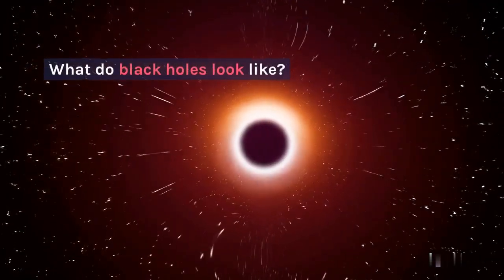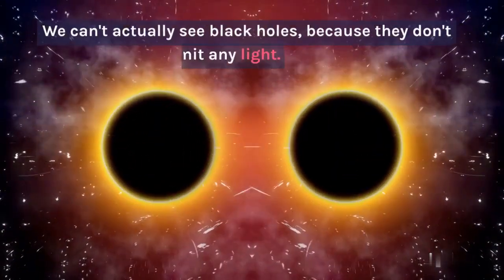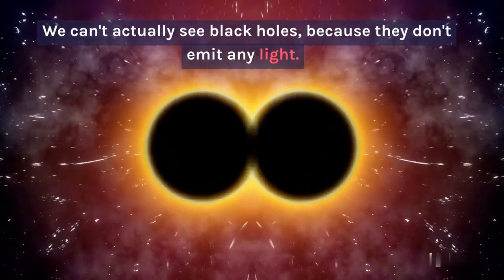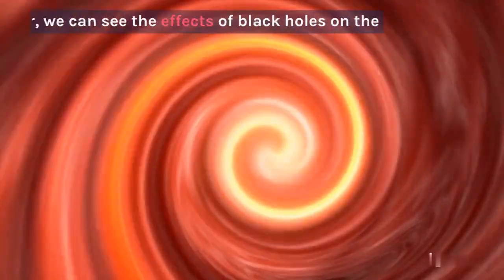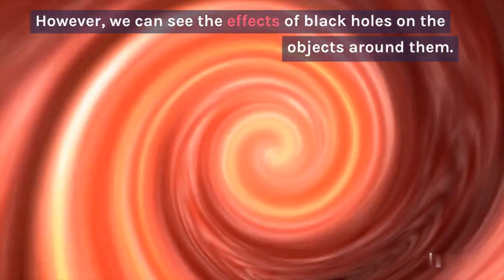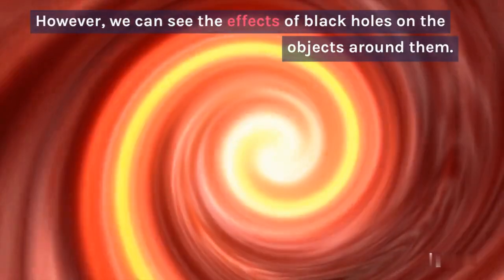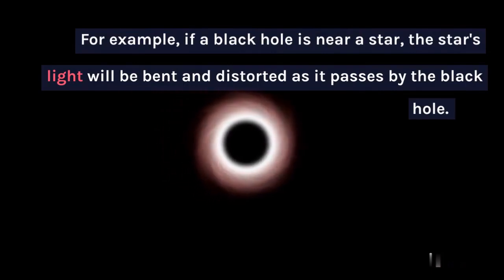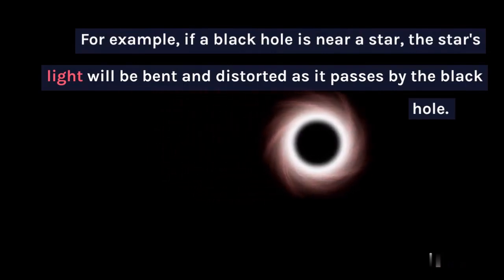What do black holes look like? We can't actually see black holes because they don't emit any light. However, we can see the effects of black holes on the objects around them. For example, if a black hole is near a star, the star's light will be bent and distorted as it passes by the black hole.